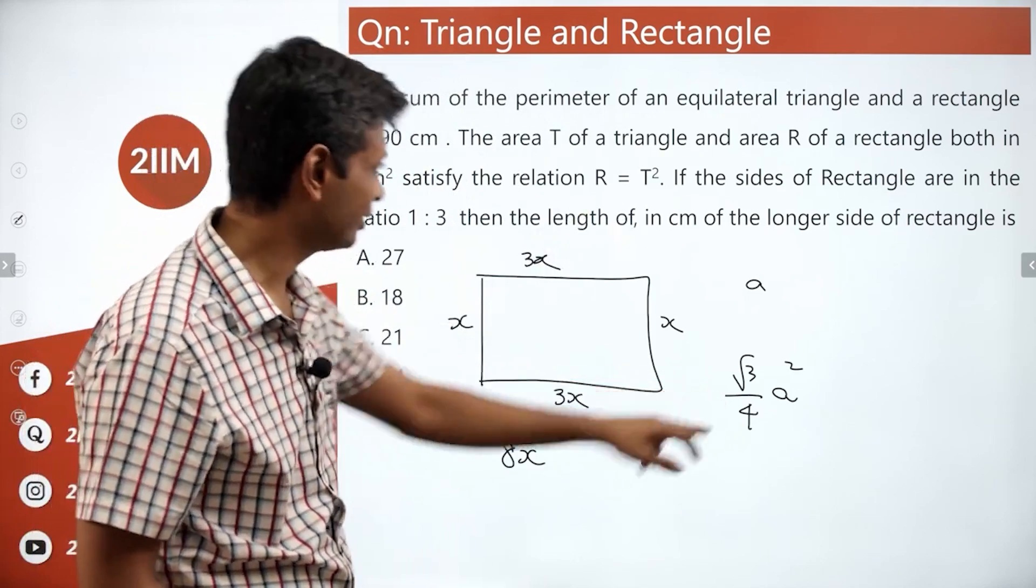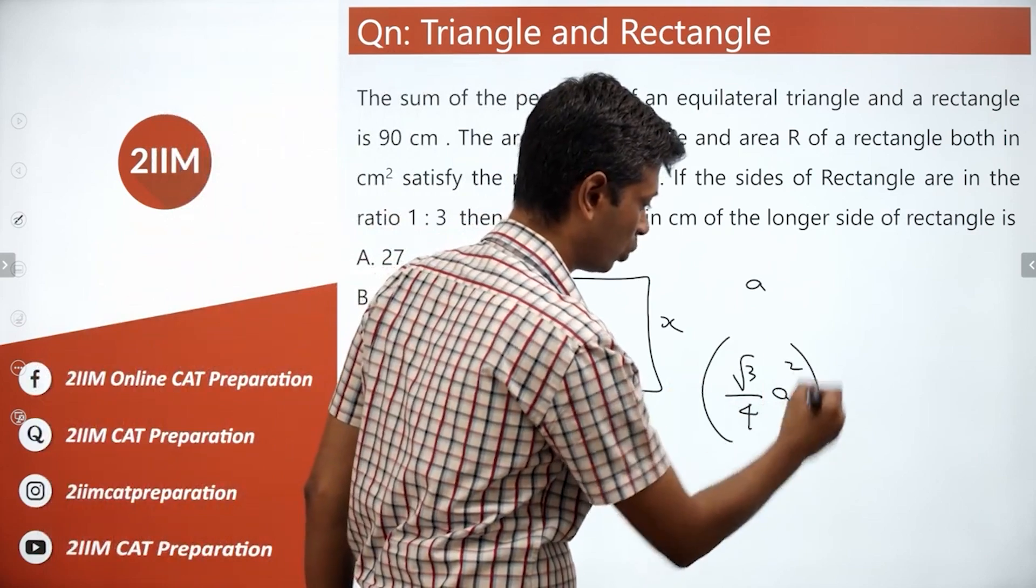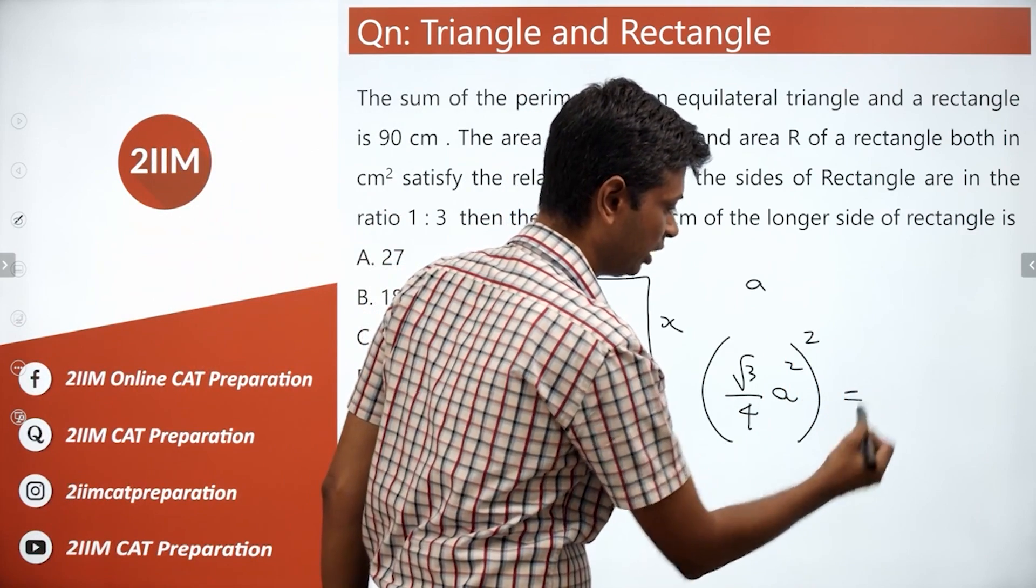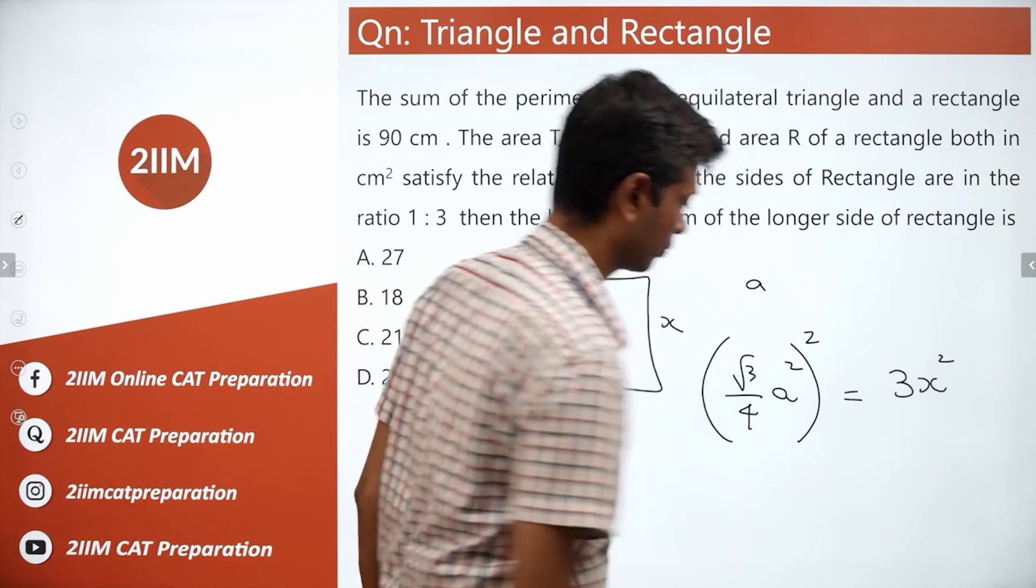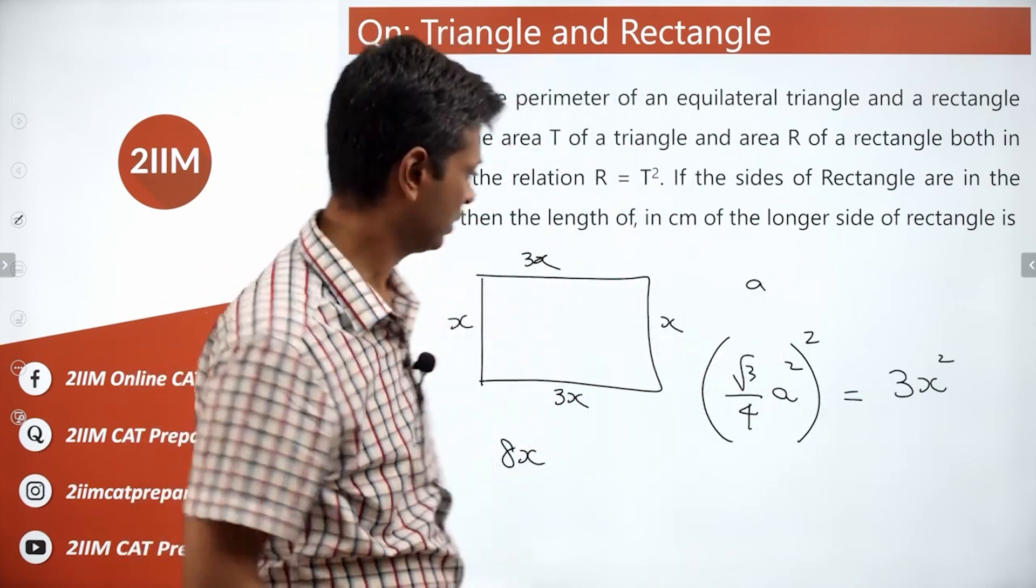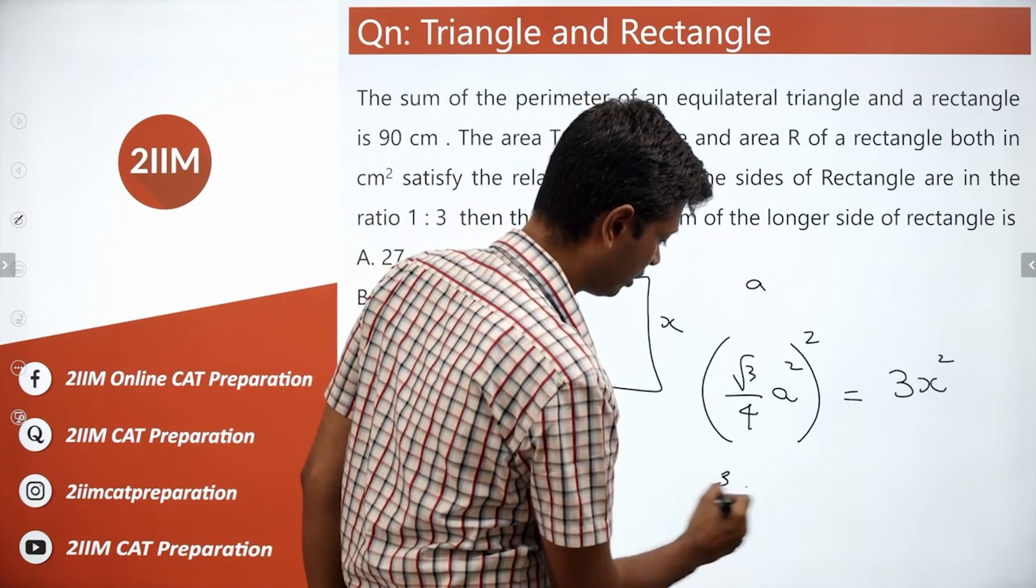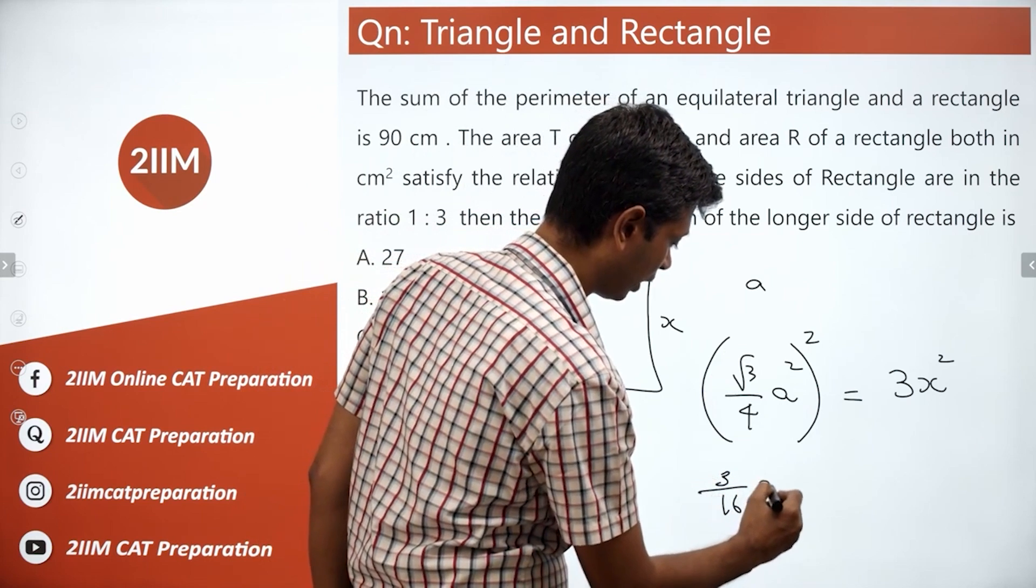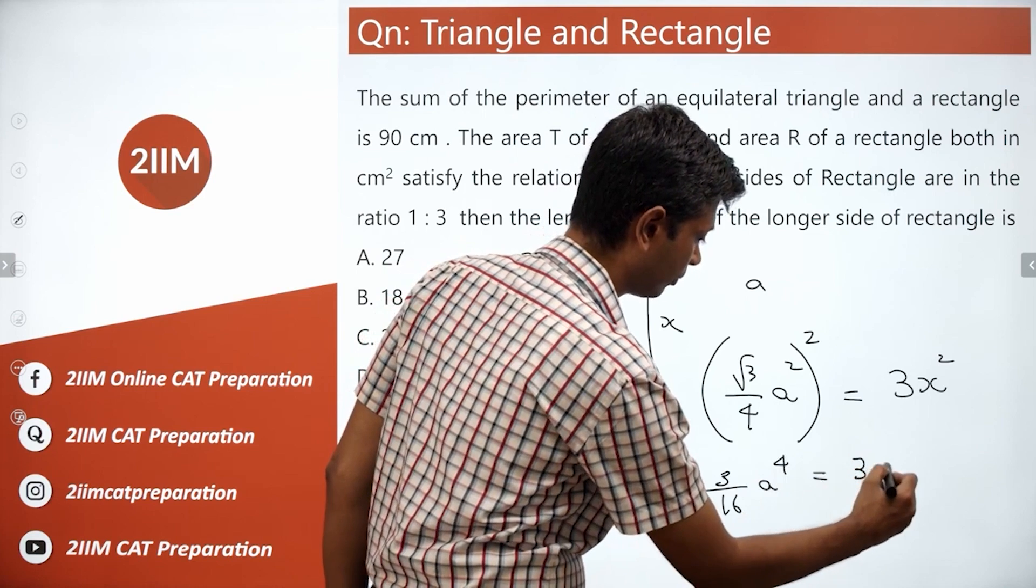So, if we square this that should be equal to area of the rectangle. We take this and square this that will be equal to area of the rectangle which is 3x square. Root 3 by 4 A square the whole square is 3x square. Root 3 by 4 A square the whole square is 3 by 16 A power 4 equals 3x square.